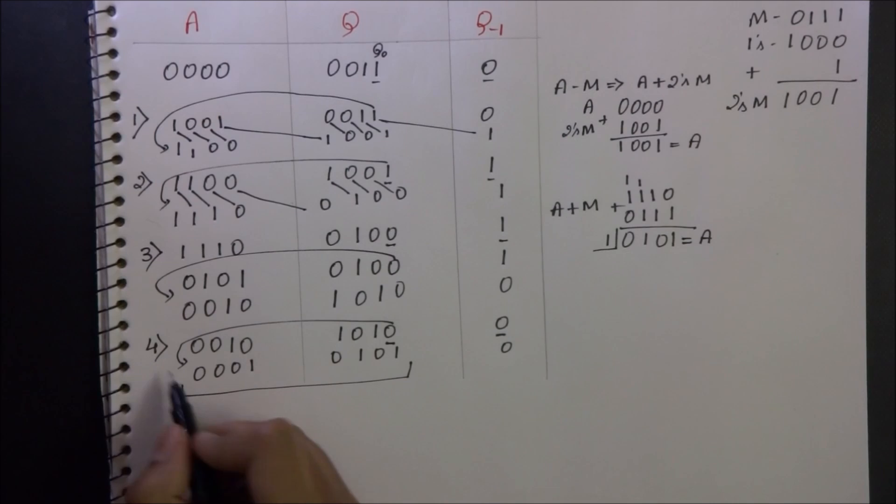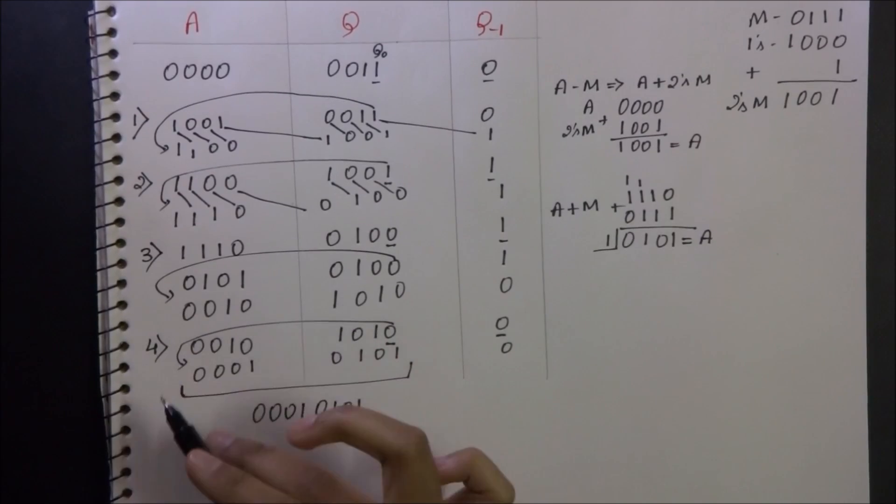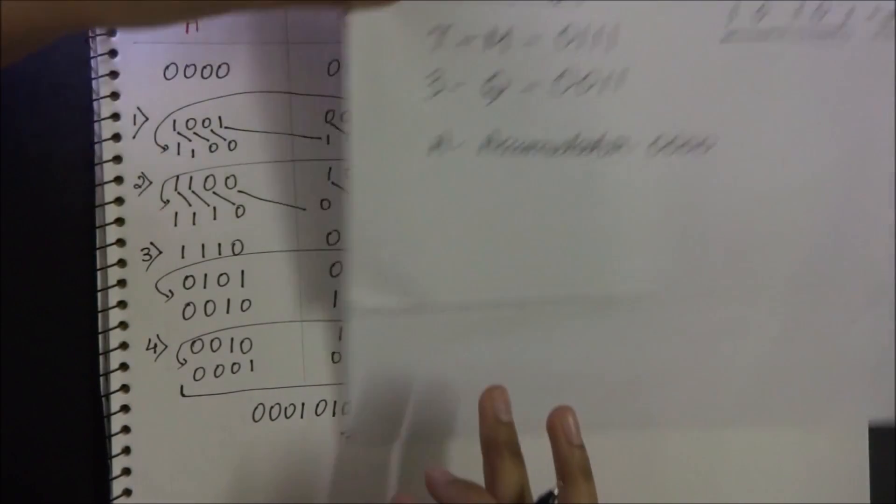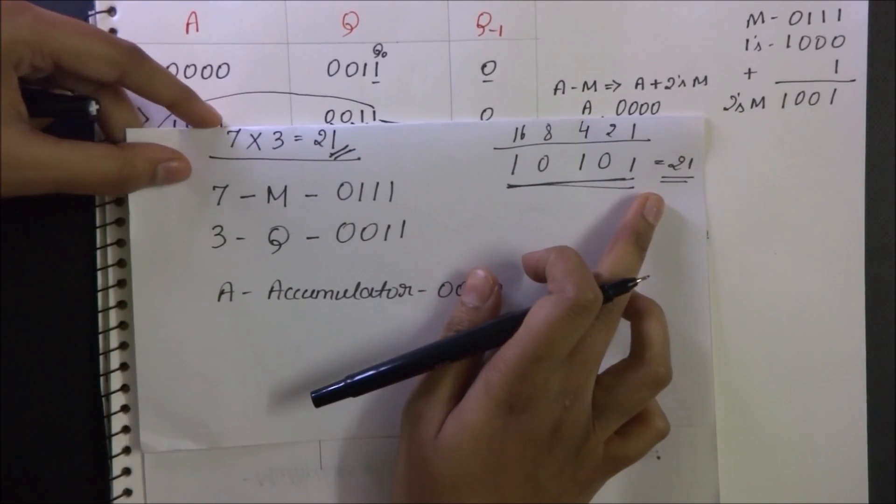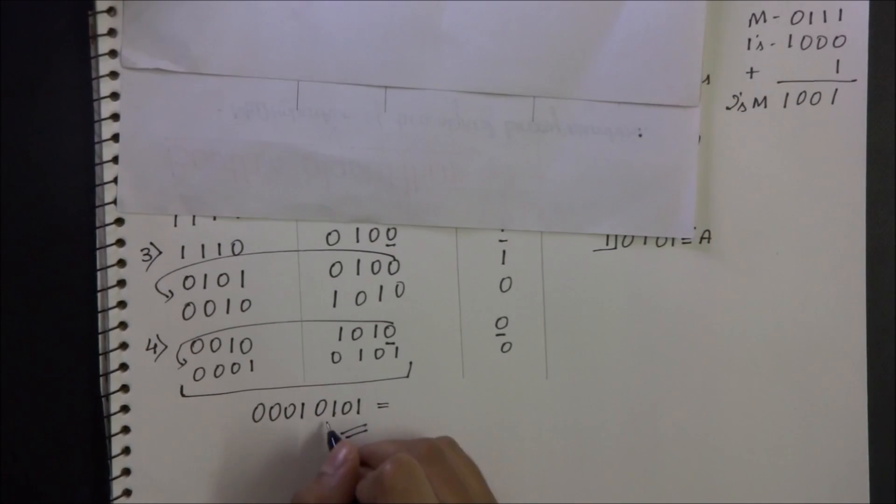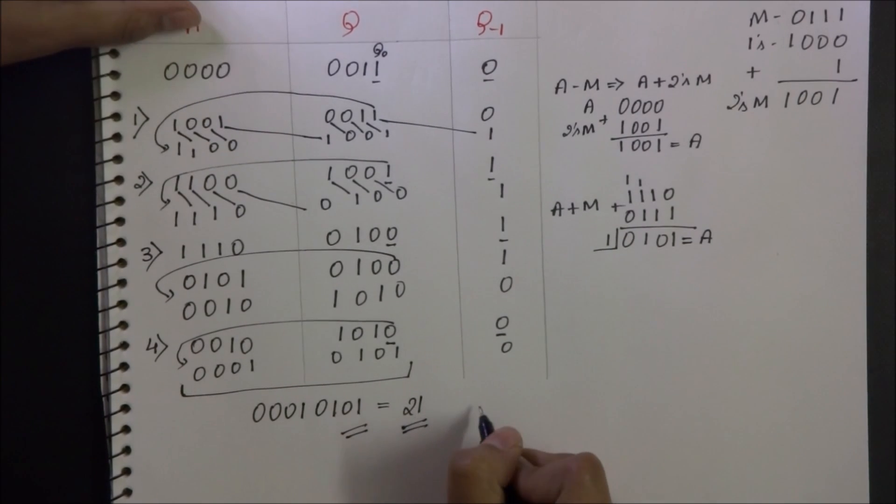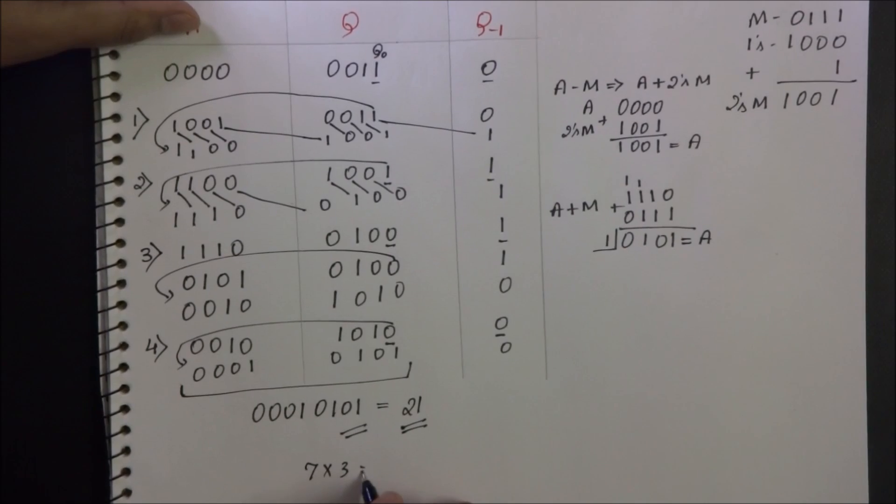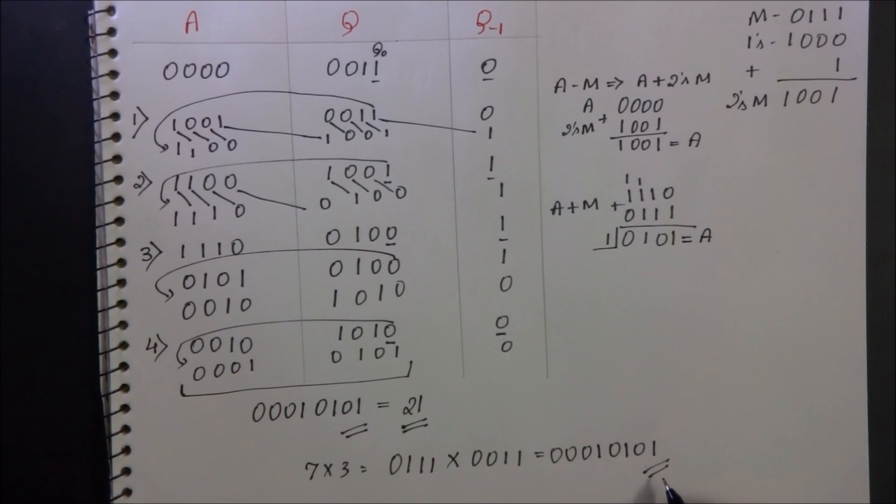At the end of fourth step combining A and Q will be the final answer. 00010101 is the final answer that I have got by the end of the fourth step. Previously I had found out that the binary equivalent of 21 is 10101. So this is exactly equal but it's in the 8-bit form which is the binary equivalent of 21. So I get 7 into 3 is equal to 00010101, the product that I have got by performing Booth's algorithm.